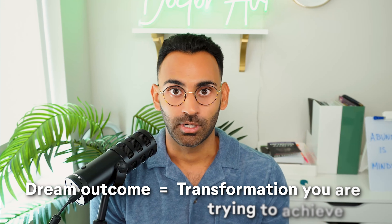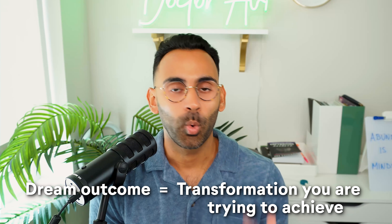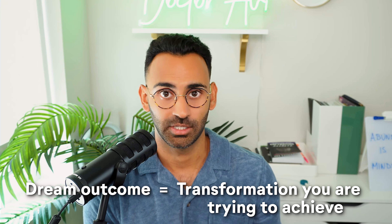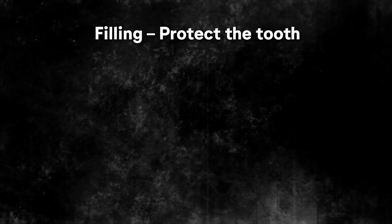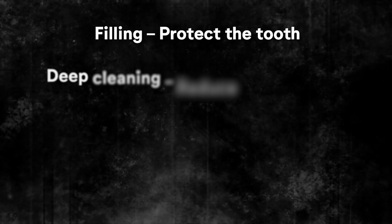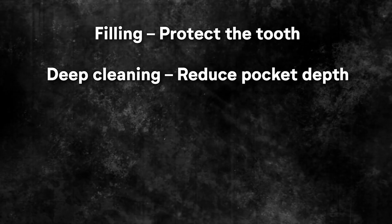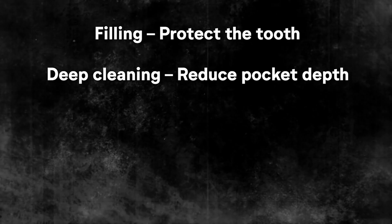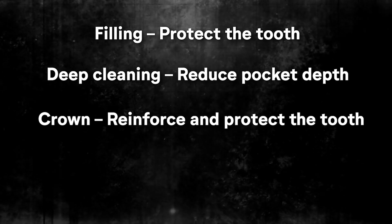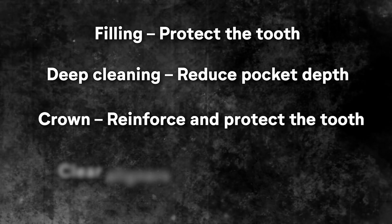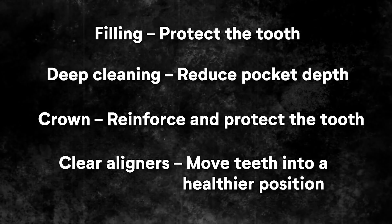Since we're talking about dental work, let's break this down and relate it to procedures. The first component is dream outcome — whatever transformation you're trying to achieve. A filling, for example, would be eliminating the bacteria and placing a restoration to protect the tooth. A deep cleaning would be removing plaque, calculus, and bacteria to reduce the pocket depth. A crown's dream outcome is to reinforce and protect the tooth. For clear aligners, the dream outcome is to move teeth into a healthier position. As the dream outcome increases, so does the value.